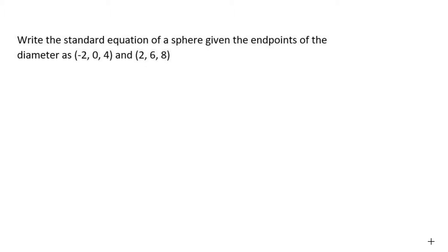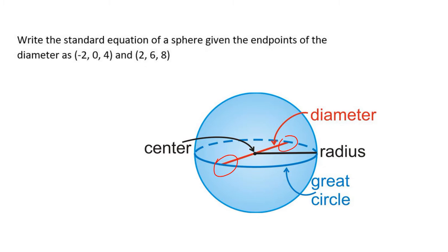So let's remind ourselves what we're looking at. We are looking at a sphere. We've got the endpoints of the diameter, and that's great, because the two things that we need are the center point and the radius. And we can find both of those things from the diameter.